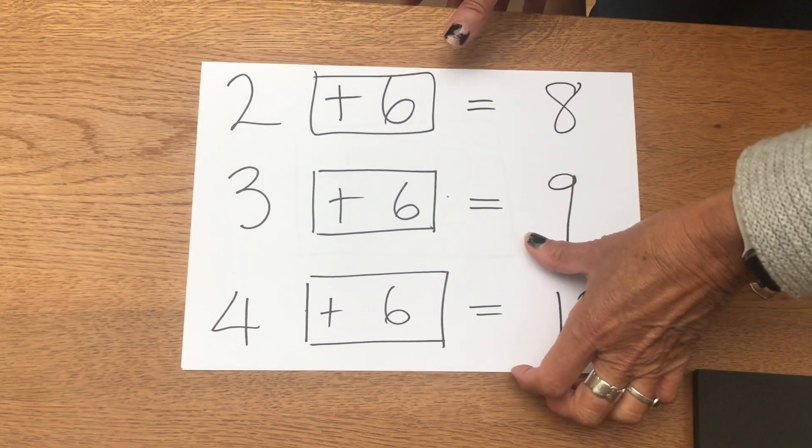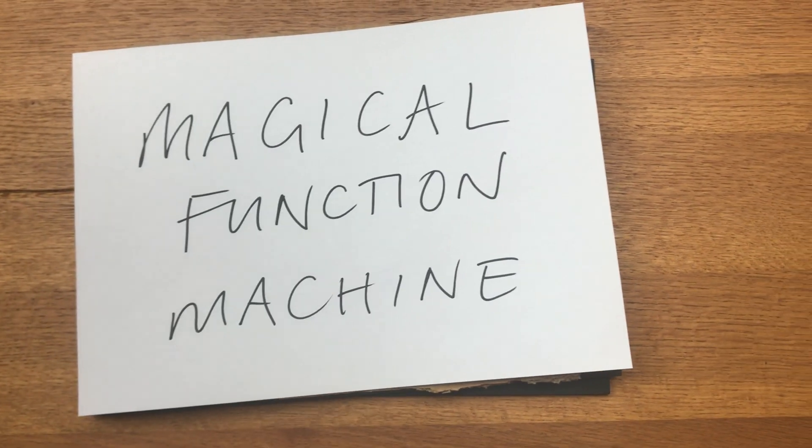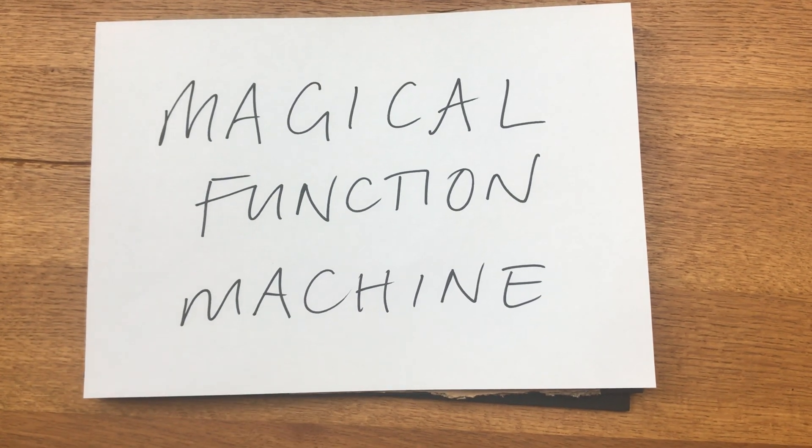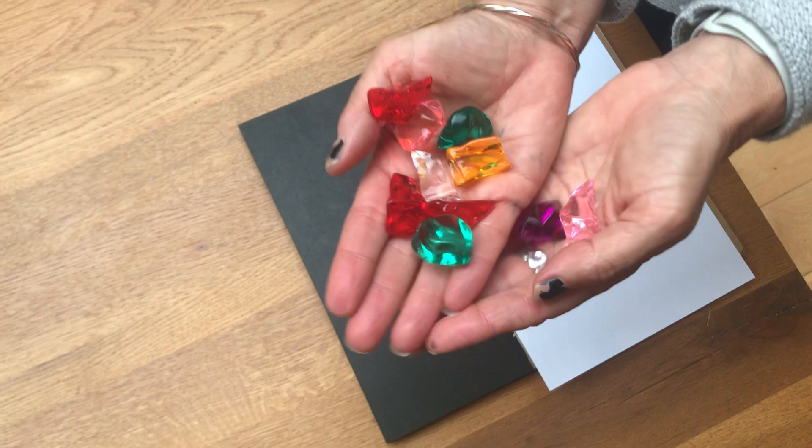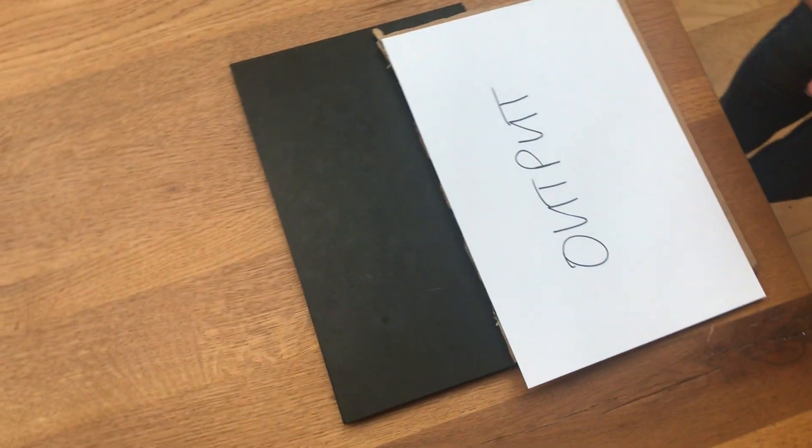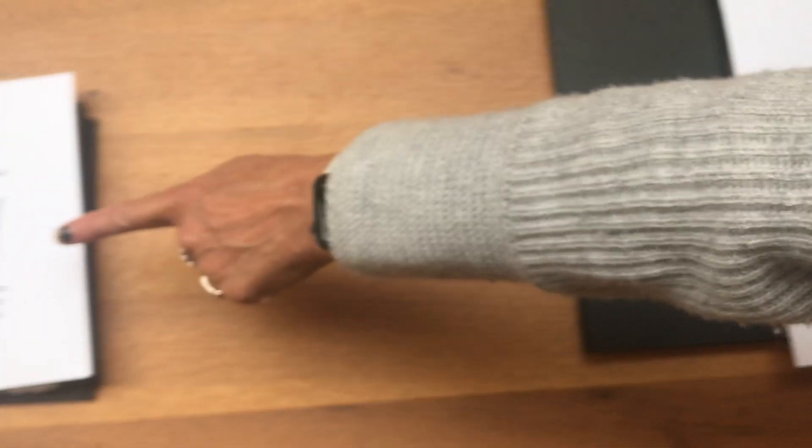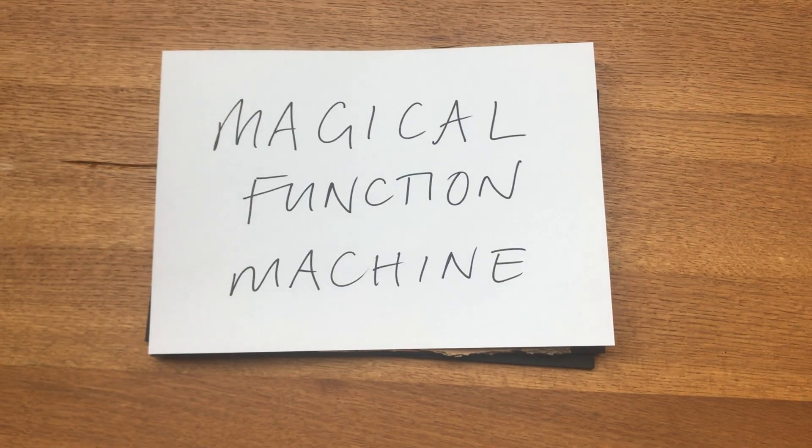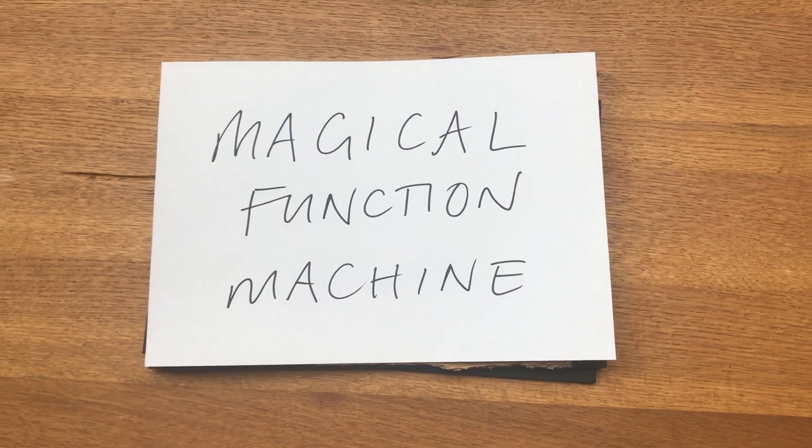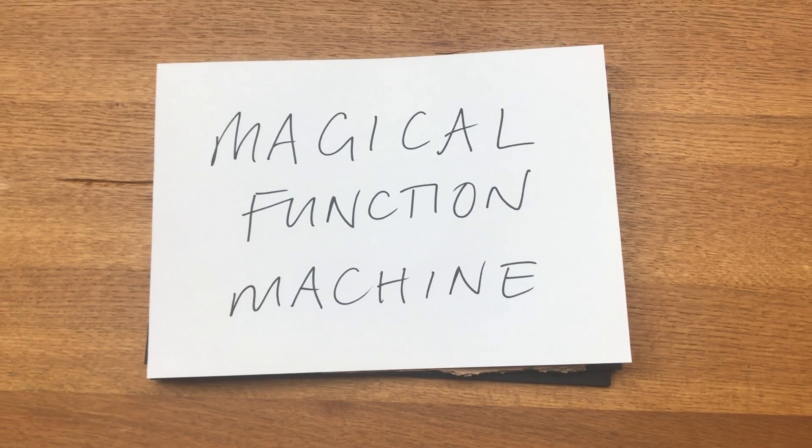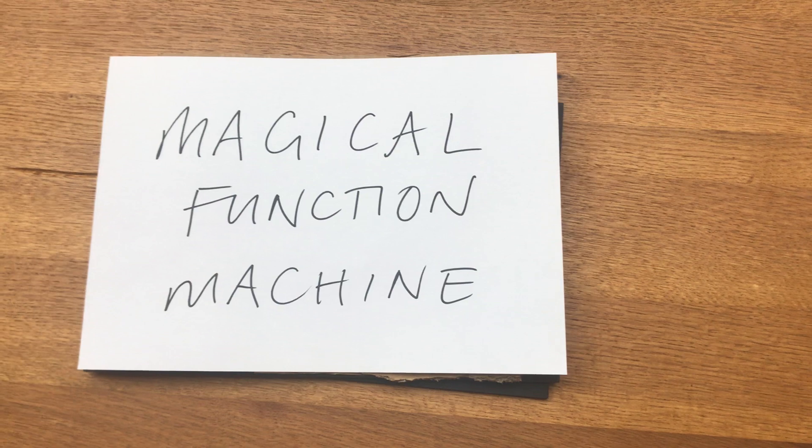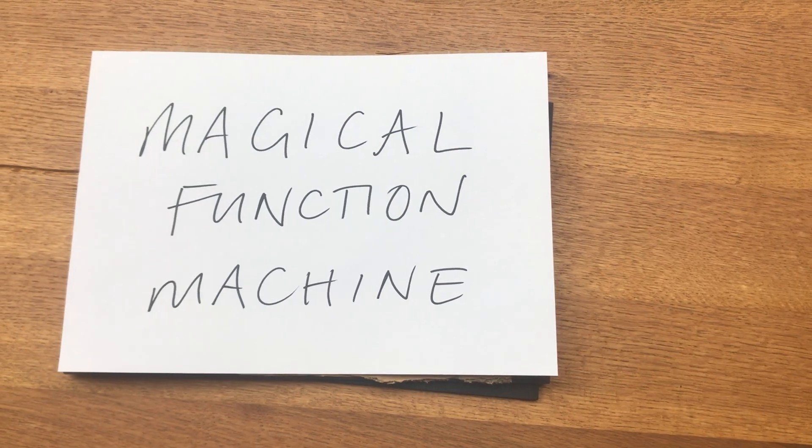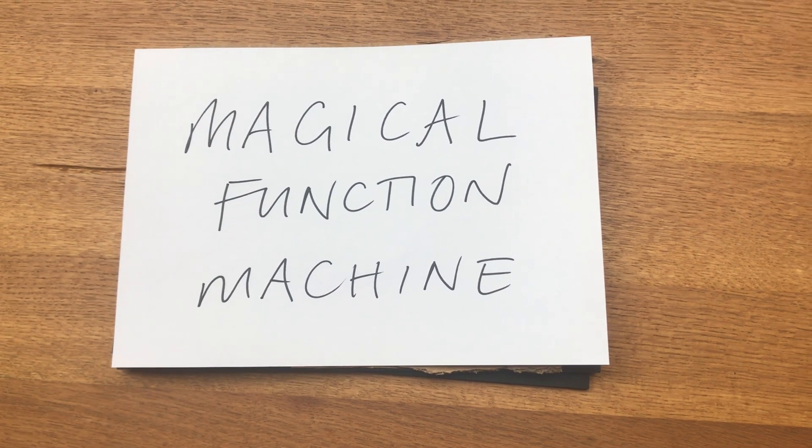Now I can use this machine to explore inverse relationships. I'm wondering if I put 11 jewels as my output into this special magical function machine, can you tell me what the input must have been? And can you write the equation to match? So it's an add six machine and the output is 11.